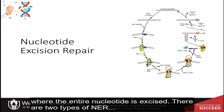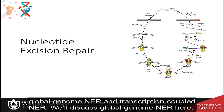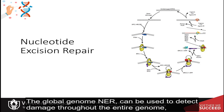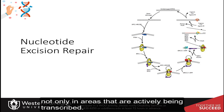There are two types of NER: global genome NER and transcription-coupled NER. We'll discuss global genome NER here. The global genome NER can be used to detect damage throughout the entire genome, not only in areas that are actively being transcribed.